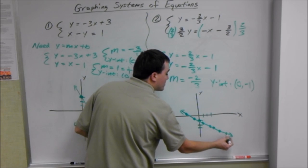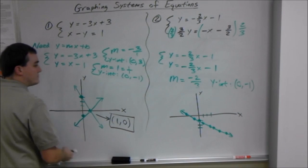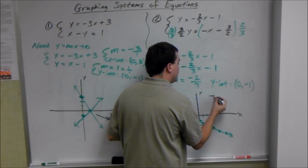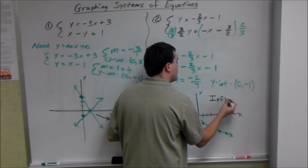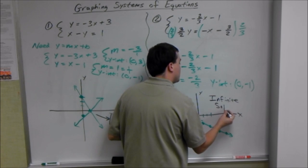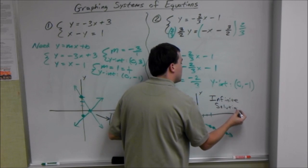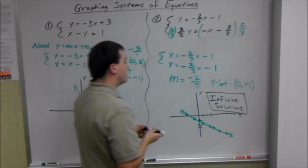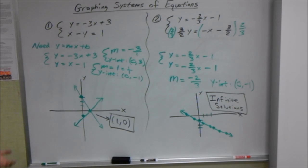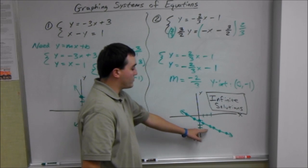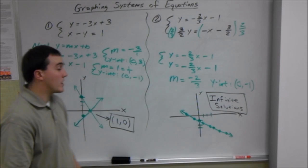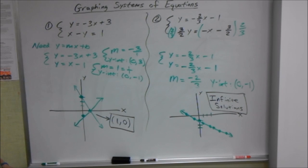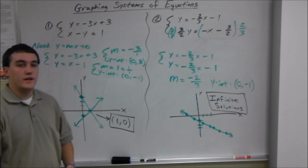So therefore, our answer is infinite solutions. Because we're just looking for where they intersect, and they intersect at every point, forever and ever in both directions. So that gives us infinite solutions. And that's all I have for today.